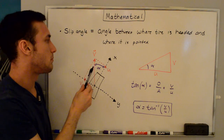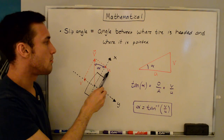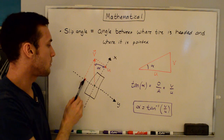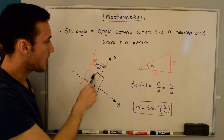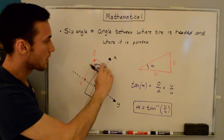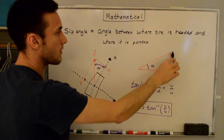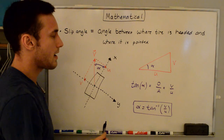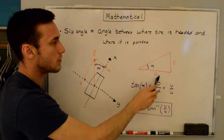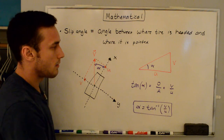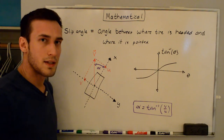To get the formula for the slip angle, we break up the velocity vector into components. Dropping a perpendicular gives us u, the component in the x-direction, and v, the component in the y-direction. From the right triangle, the tangent of alpha equals opposite over adjacent, giving us v over u. Rearranging, the slip angle alpha equals the inverse tangent of v over u. That's the mathematical definition of the slip angle.